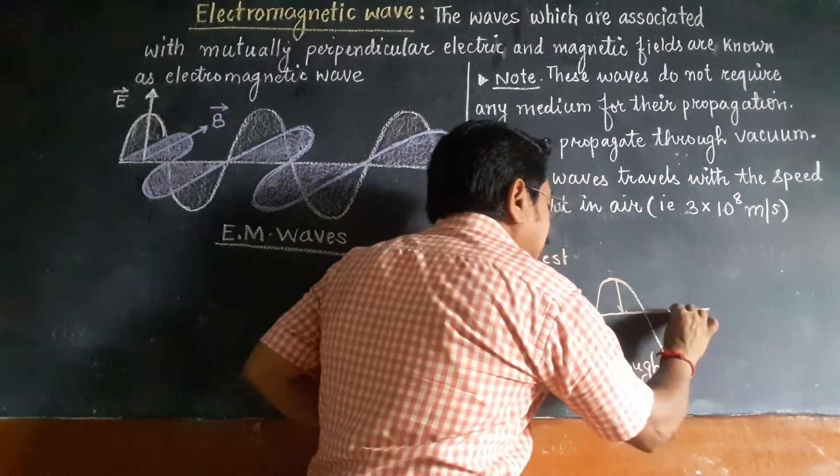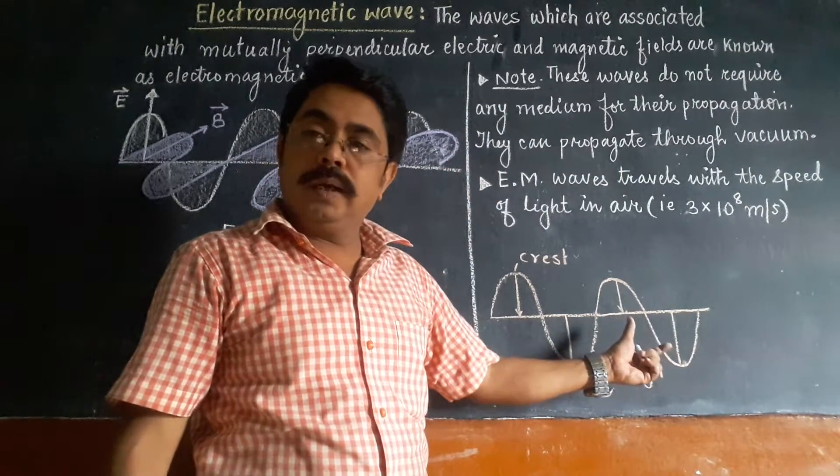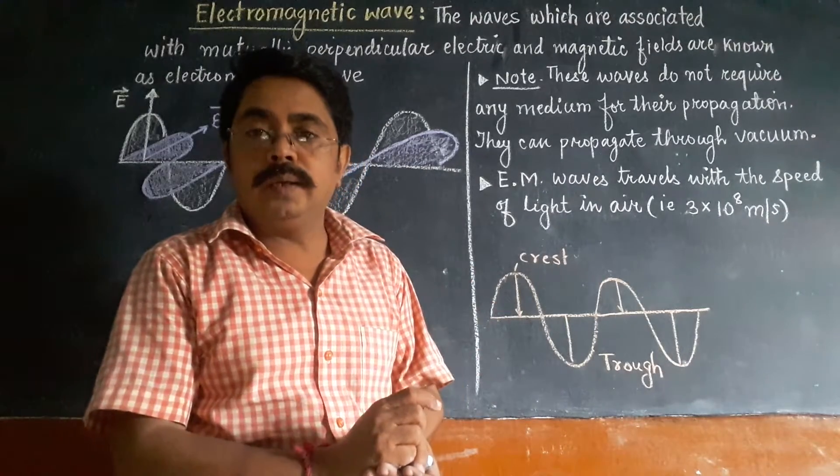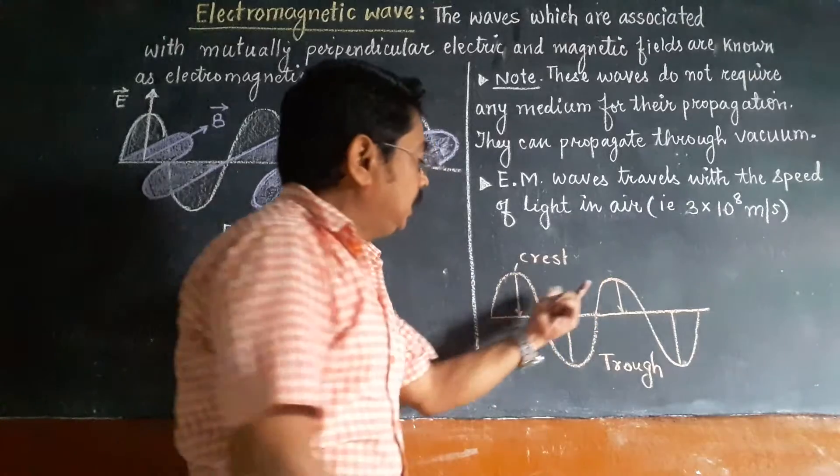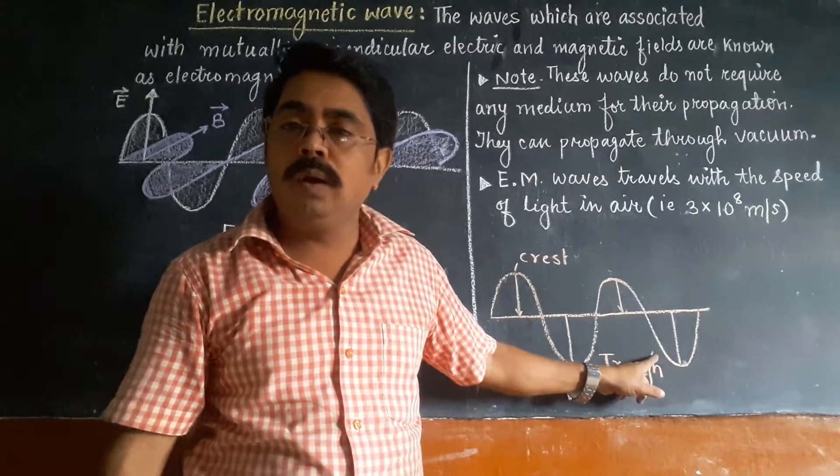And then upward displacement will be same as the downward displacement of the particle. And this wave, this is another wave. So here are two waves. These two crests are called crests.